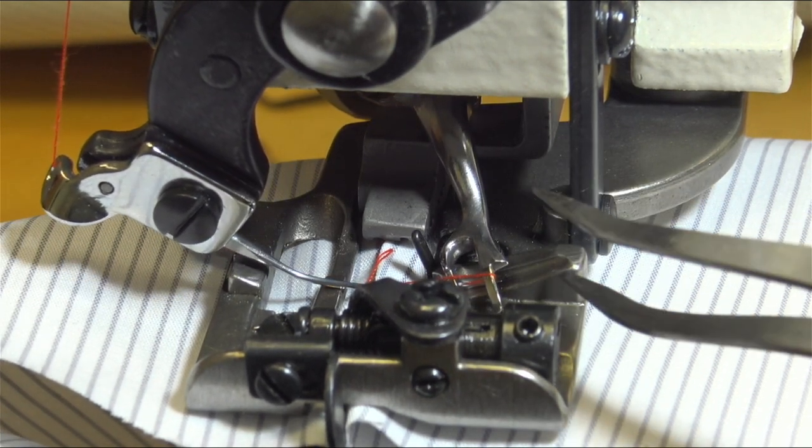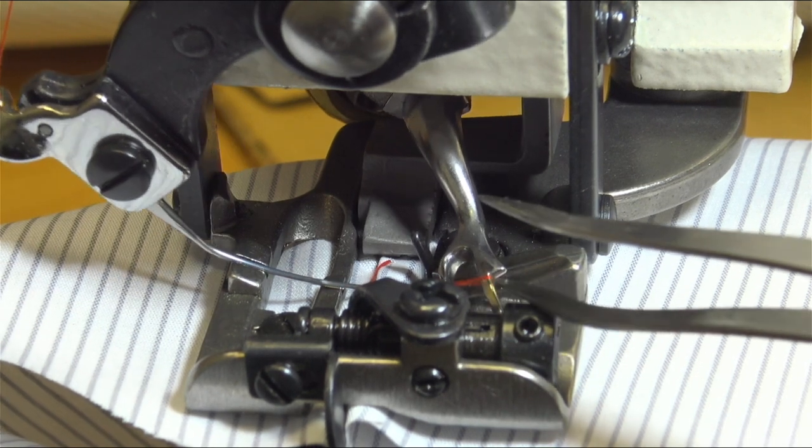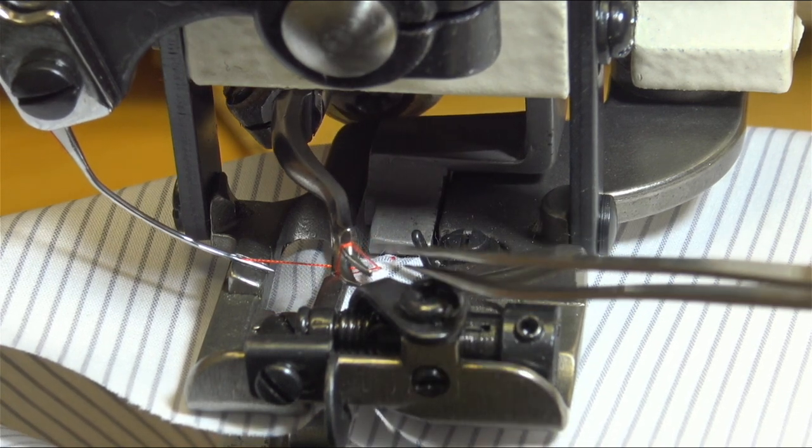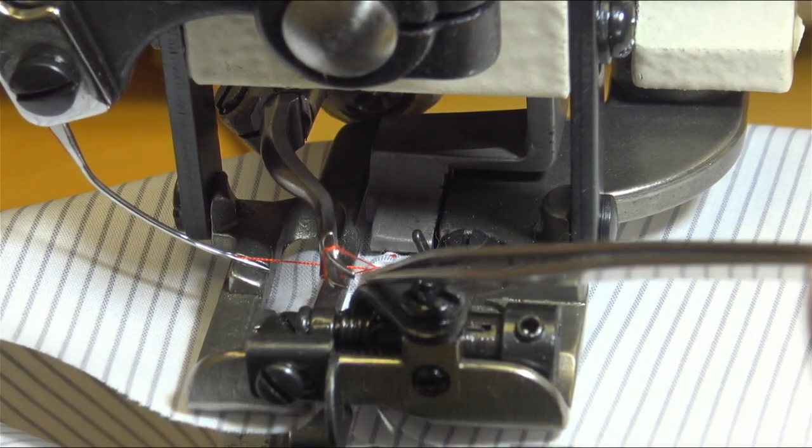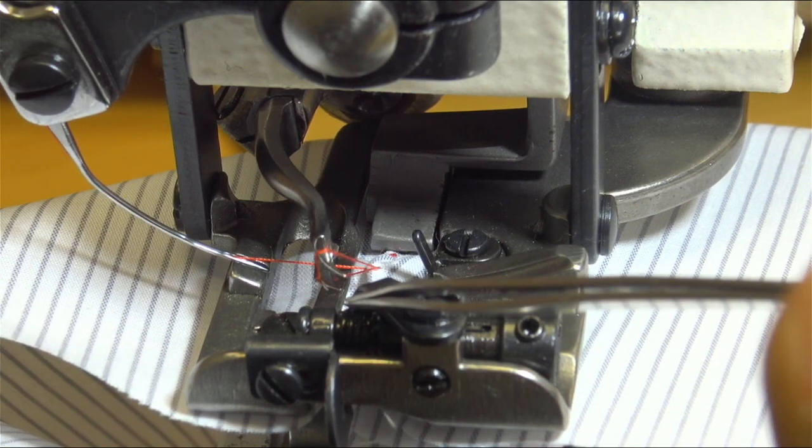So after finish stitching, how to take out the fabric. This looper is important. The looper should come to this side on the maximum higher, then go to center here. After this area, in between here, this area.